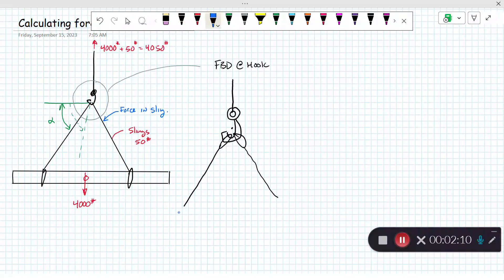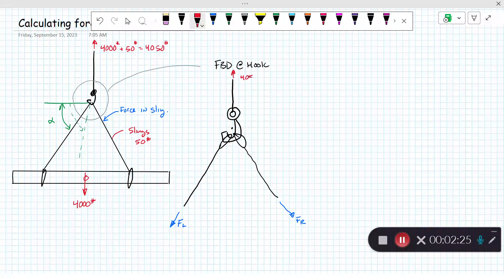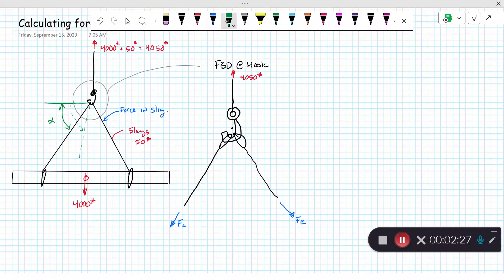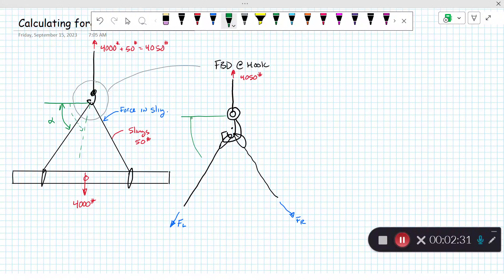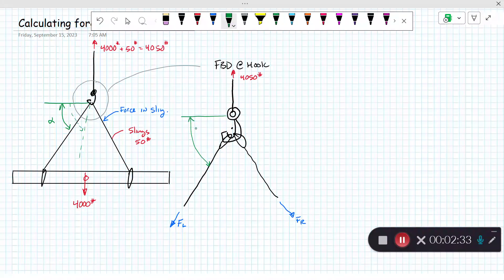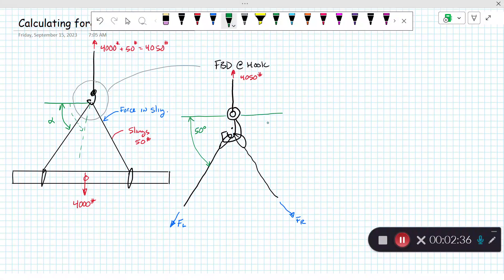They all come together at one point. Our question is how much force in the left cable and how much force in the right cable. We know that the force in the upper cable is 4,050 pounds. We're going to need to know the angle. Let's say this angle is 50 degrees.